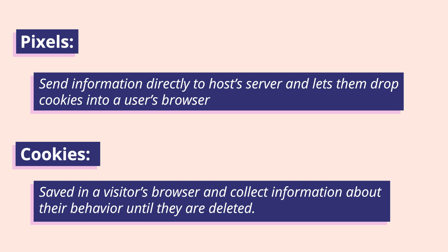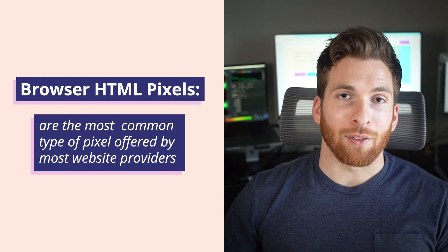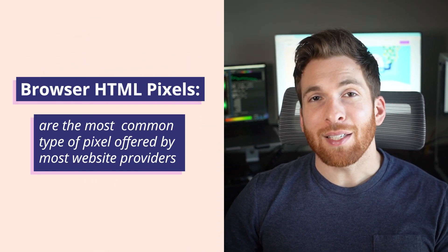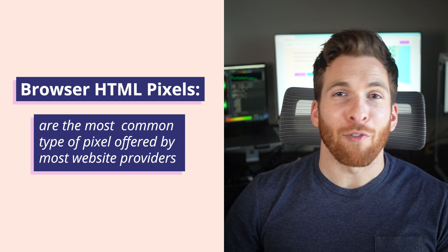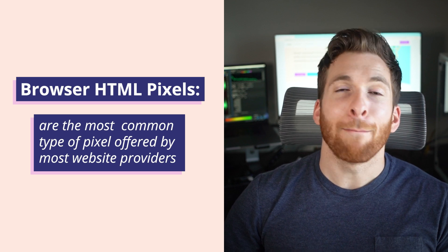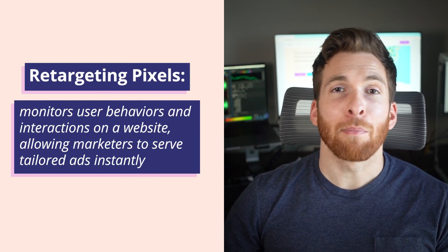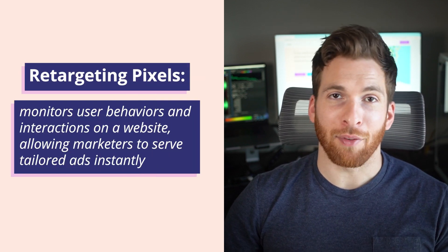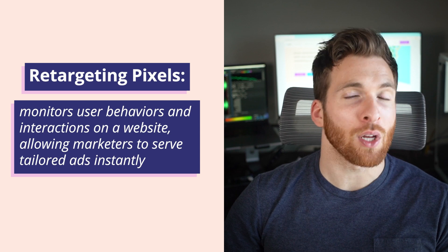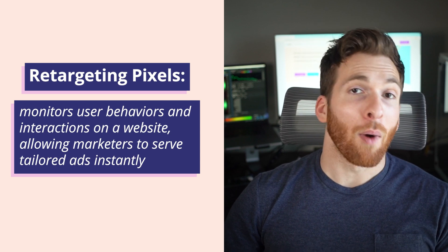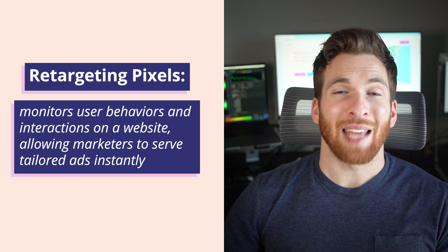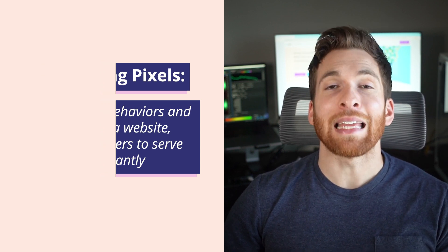There are also different types of pixel codes, each of which have a unique purpose. Browser HTML pixels are the most basic and common type of pixel offered by most website providers. Retargeting pixels are used to monitor user behaviors and interactions on a website, allowing marketers to serve tailored ads instantly.